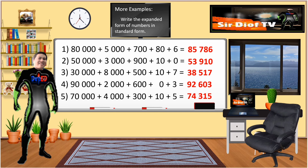Number 4: 90,000 + 2,000 + 600 + 0 + 3 = 92,603. Number 5: 70,000 + 4,000 + 300 + 10 + 5 = 74,315.